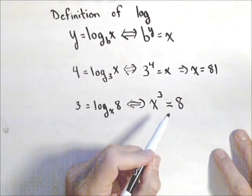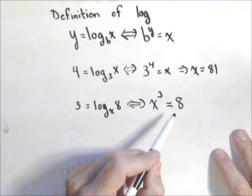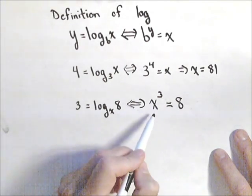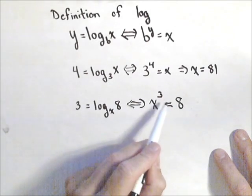Now if we had a more difficult one, what we would do is take the cube root or raise both sides to the one-third power. Now this one's not so bad because 2 cubed is equal to 8.